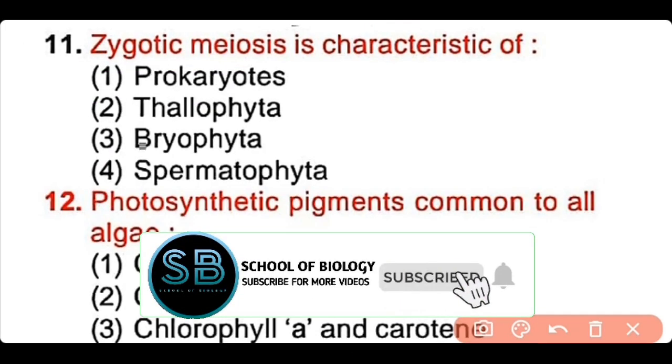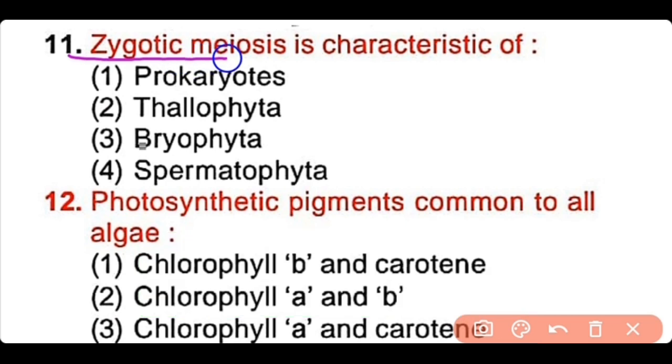Question number 11: Zygotic meiosis is the characteristic of prokaryotes, thallophytes, bryophytes, or spermatophytes? The correct answer is option 2, thallophytes.